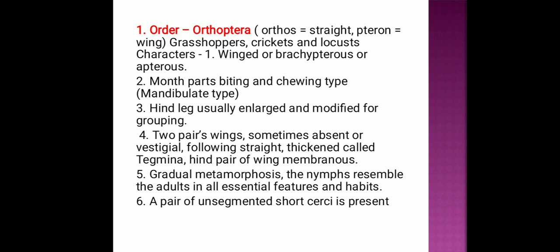Order Orthoptera: 'Ortho' means straight, 'ptera' means wing. About 20,000 species are present worldwide in this order. These are medium to large insects with well-developed exoskeleton, usually with two pairs of wings. The forewings are rather harder in texture than the hindwings.